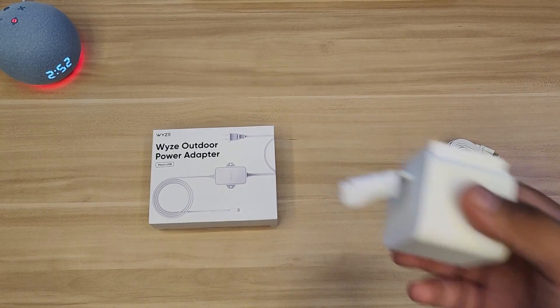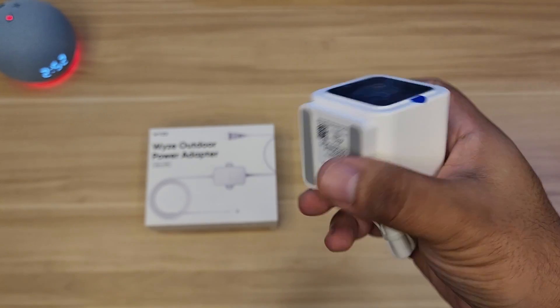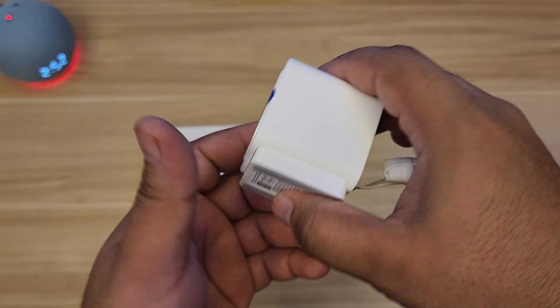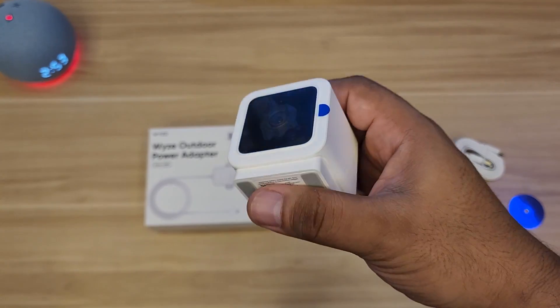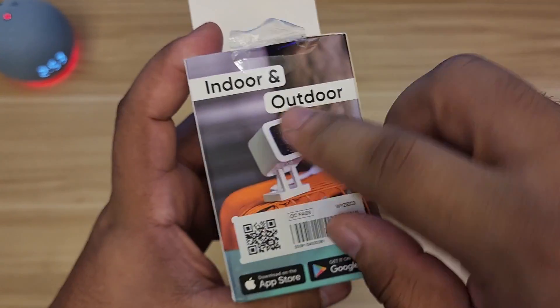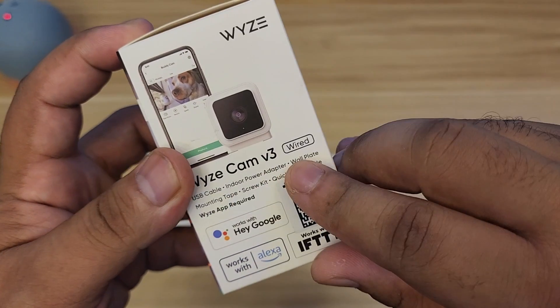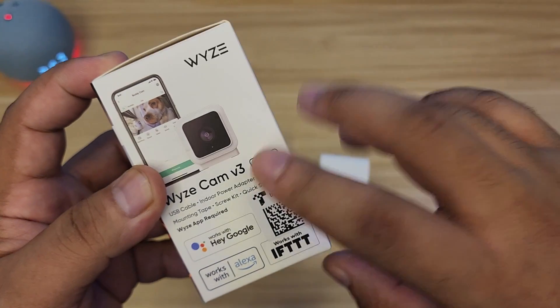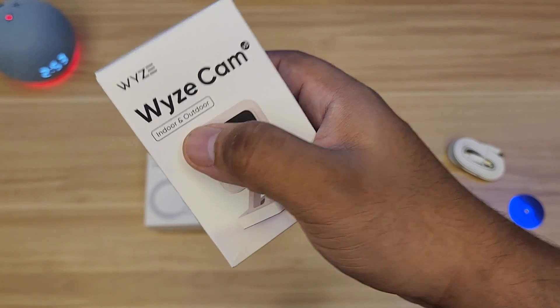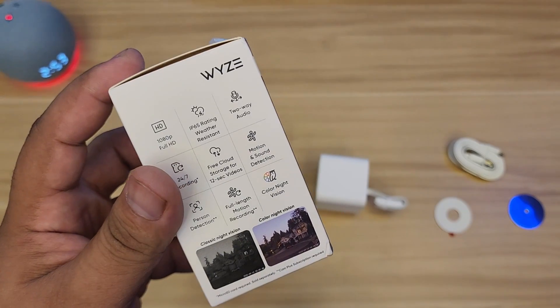This is the Wyze Camera v3. The difference from the v2 or another Wyze camera that is not specifically mentioned as outdoor camera - this is actually waterproof already, so it can be outdoor and indoor. Going back to the box real quick, it says indoor and outdoor. It's the wired version, not solar or wireless.